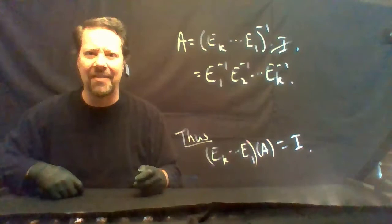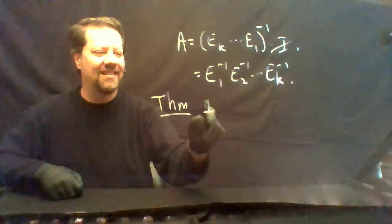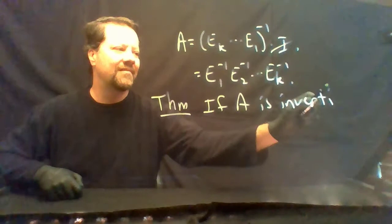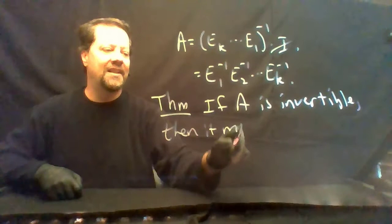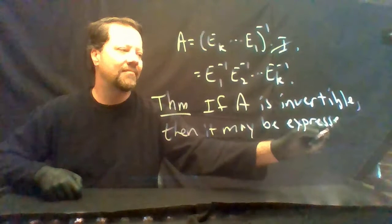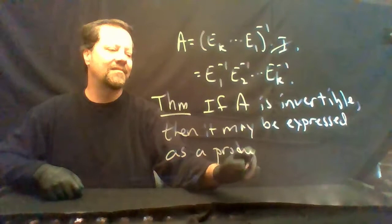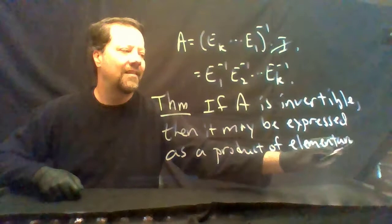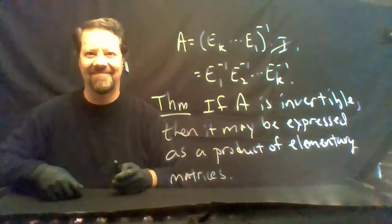Let's write that down as a theorem: if A is invertible, then it may be expressed as a product of elementary matrices.